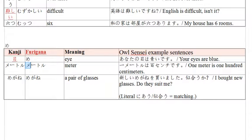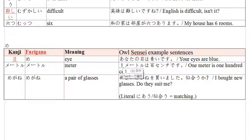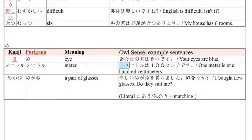And we have meetoru - meetoru for the distance meter. So: ichi meetoru wa hyaku senchi desu. One meter is one hundred centimeters. Ichi is one, meetoru with a long sound, one meter is hyaku - one hundred - and senchi for centimeter. One meter is one hundred centimeters.